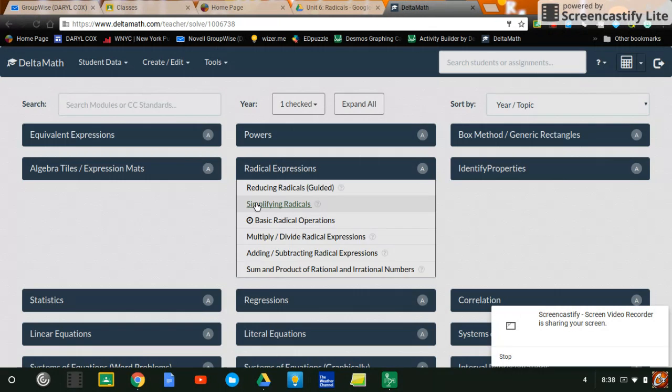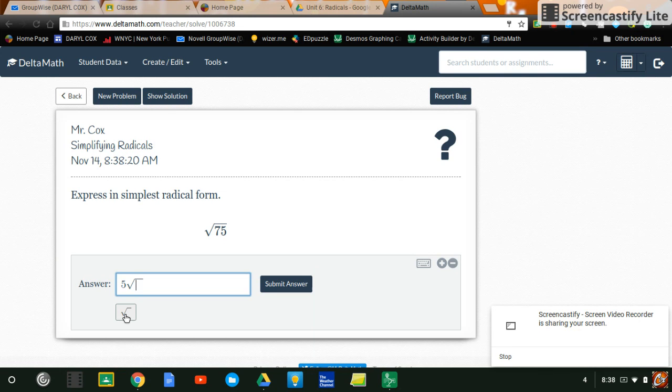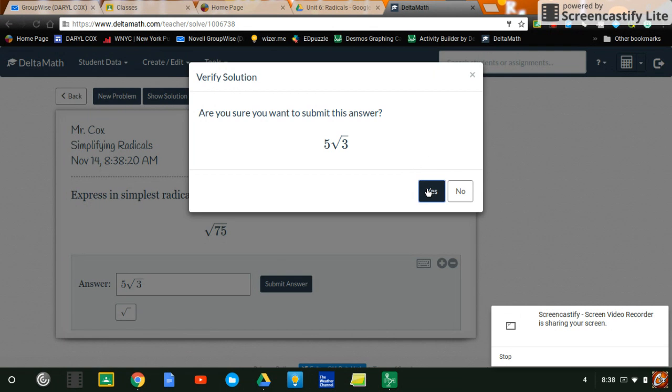And they're always going to ask you. The other kind of problem is they're not going to guide you through it. They're just going to say, what's the square root of 75? I could break it down as 25 and 3. So that's 5 square root - see there's a little square root button there - 5 square root of 3. There we go. So that's the idea. Perfect squares divide into 75.